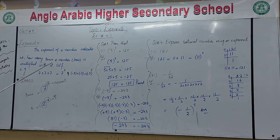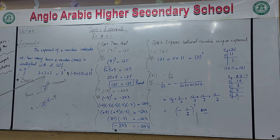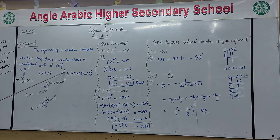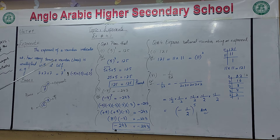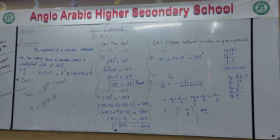Exponent is the easiest form. For example, seven multiplied with seven, seven multiplied with seven and seven — you have three times seven. So in exponent form, you write seven to the power three. The power, which we call the exponent, means seven is multiplied three times by itself. Similarly, minus three multiplied with minus three — that is two times — so the exponent is two.